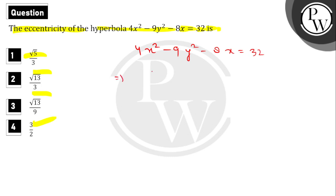Let's simplify this equation. If we take 4 as common, then we get x² - 2x. In this equation, we also have -9y² and equals 32.